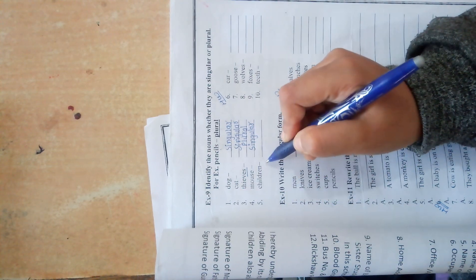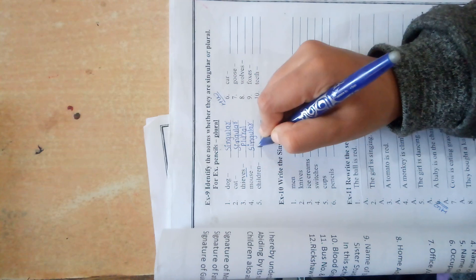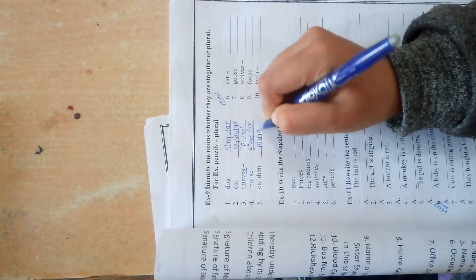Next, number 5: children. Children is plural form of child, so it is plural. 1 to 5 classwork, 6 to 10 homework.